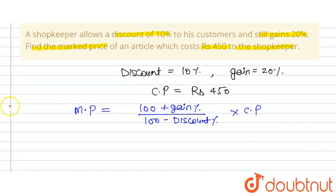So now substitute the values. As we know that 100 plus gain percent, this is equal to 20, upon 100 minus discount is 10, so minus 10, into CP 450. Okay, now we will calculate MP, that is the marked price.